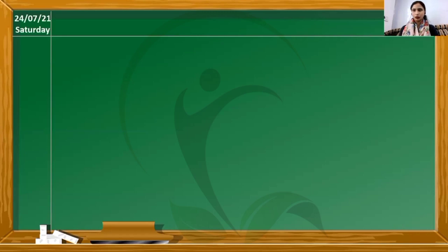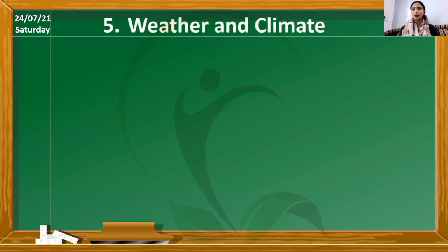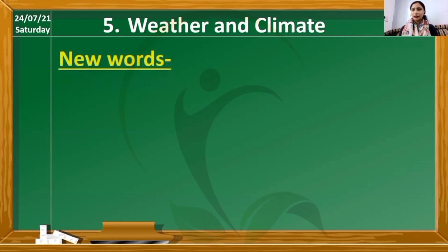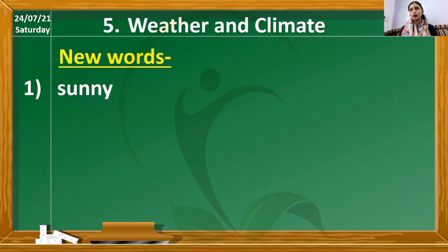Draw the format clean and neat with good handwriting. Write down the date: 24th July 2021, Saturday. This is the fifth chapter — Weather and Climate — so write down the heading and title of the topic. Now let us start writing the new words. The first new word is sunny, S-U-N-N-Y, sunny.